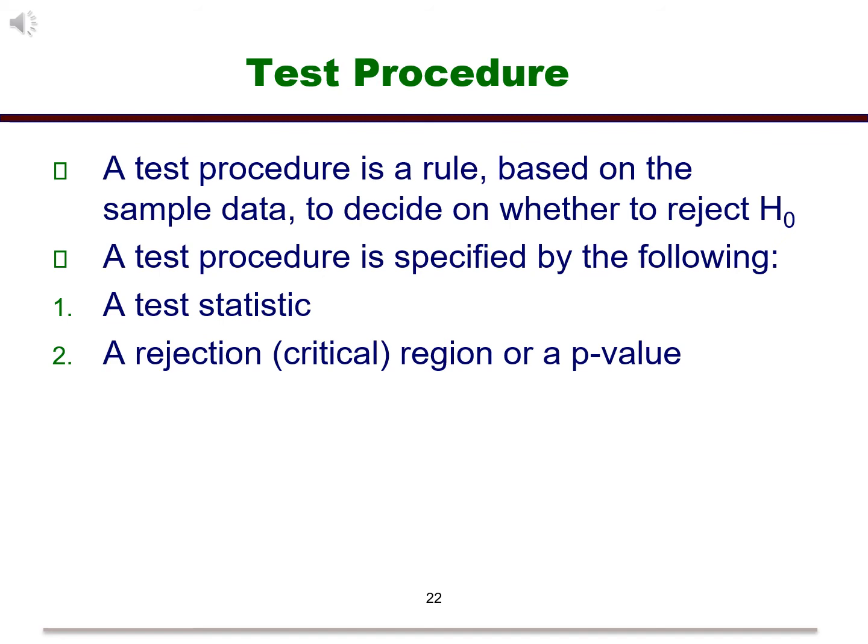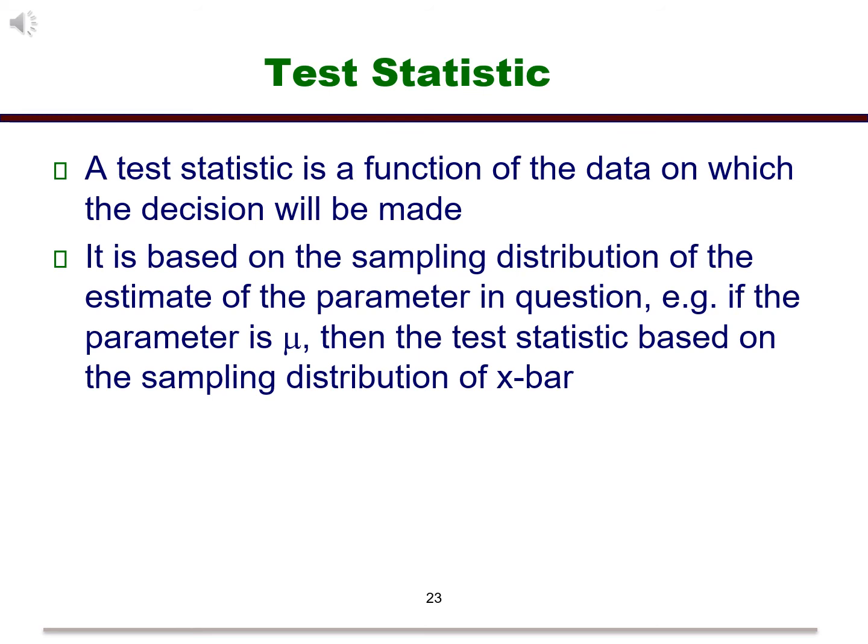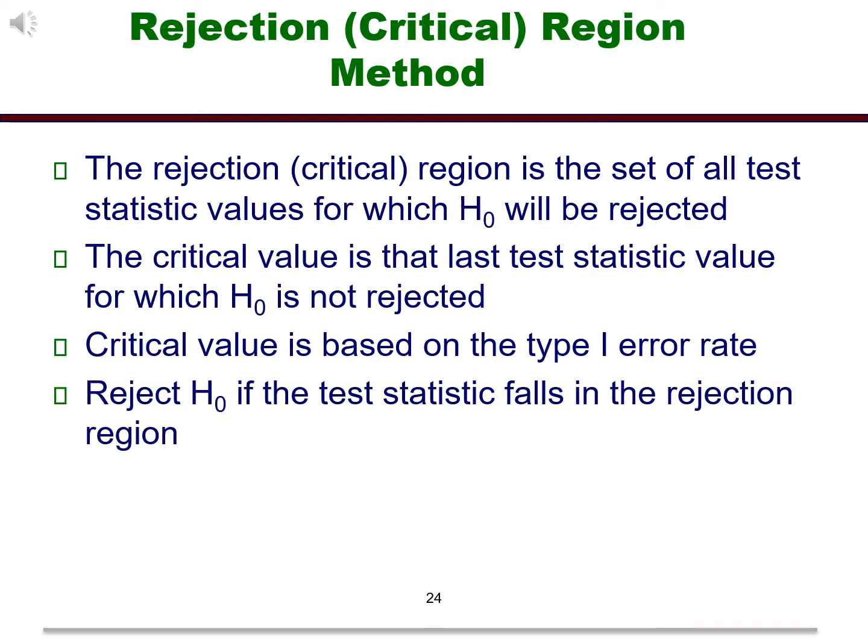We will use a test procedure to run our hypothesis test. A test procedure is a rule based on the sample data to decide on whether or not to reject the null. A test procedure consists of a test statistic and a method to make our decision. This can be done using either the rejection region method or the p-value method. We will create the test statistic based on the sampling distribution of the sample statistic in question. So for a hypothesis test about a mean, we will build the test statistic based on the sampling distribution of x-bar. The rejection region is the set of all test statistics values for which the null hypothesis would be rejected. The critical value is the last test statistic value for which the null is not rejected. The critical value is based on a type 1 error rate. Reject the null if the test statistic falls within the rejection region. The critical value is determined in the same manner in which we found it when we were talking about confidence intervals.